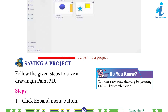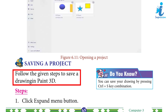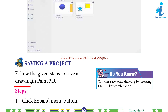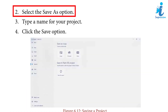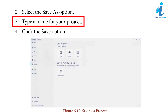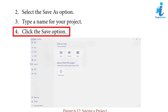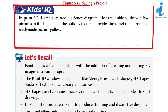Saving a project: follow the given steps to save a drawing in Paint 3D. Step 1: Click the Expand Menu button. Step 2: Select the Save As option. Step 3: Type a name for your project. Step 4: Click the Save option. Step 5: Click the file for your collection.